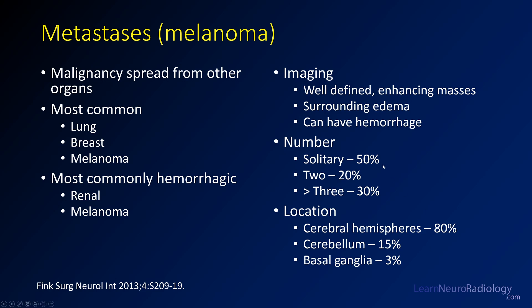On imaging, they're well-defined enhancing masses with surrounding edema and can have hemorrhage. 50% of them will be solitary, but the rest will be multiple. The most common locations are the cerebral hemispheres, particularly at gray-white junctions, and you'll also see them in the cerebellum and basal ganglia.